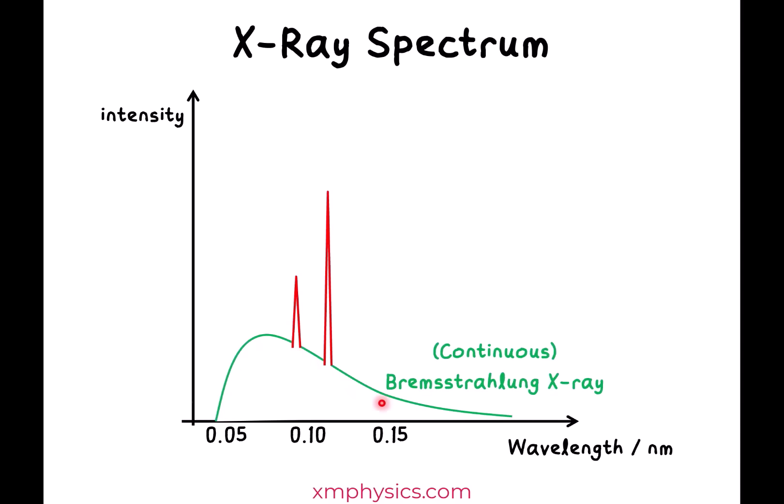Besides the breaking radiation, you also see very distinct sharp spikes here. Clearly these are discrete line spectra. The discrete spectrum part of the X-ray is called characteristic X-ray, and these lines are called characteristic lines.